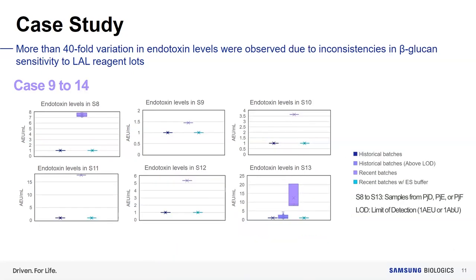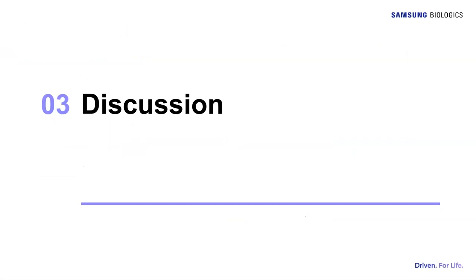Six additional cases show similar trends to the previous cases. Variations in LAL reagent beta-glucan sensitivity are not consistent, and can result in repeated false positive reactions, leading to undue quality record investigations. In some cases, it may result in unnecessary product rejections and drug supply issues. This is financially critical to manufacturers and may critically impact patients if they cannot receive a drug on time.